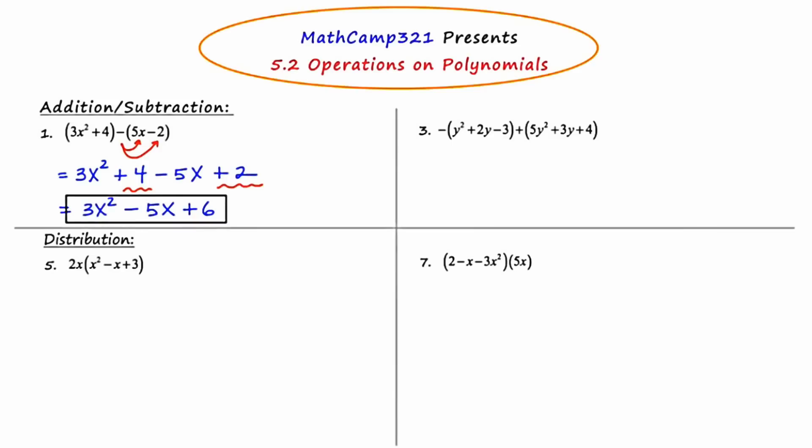Just a quick reminder that when you're writing your answer for a polynomial problem, it's customary to write your answer in descending exponential order where possible. That means you want your highest power first and then descend in order until you get down to the constant.